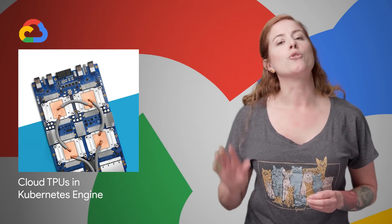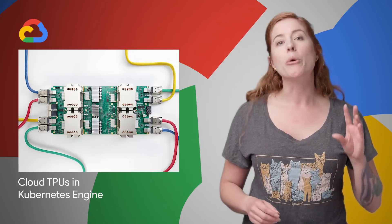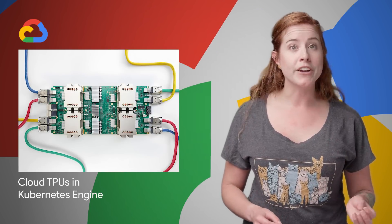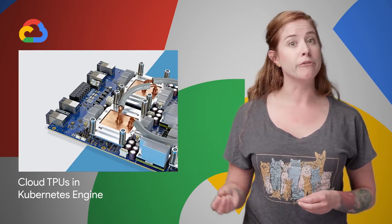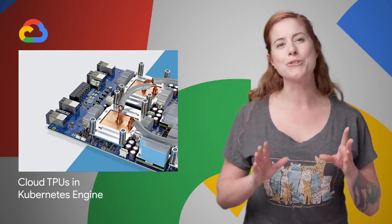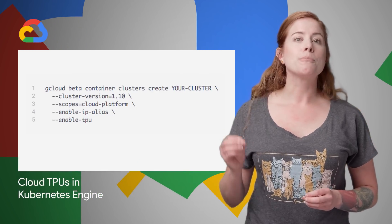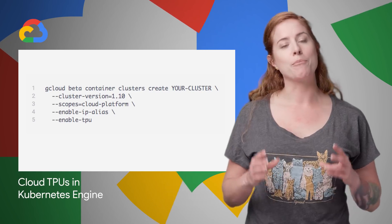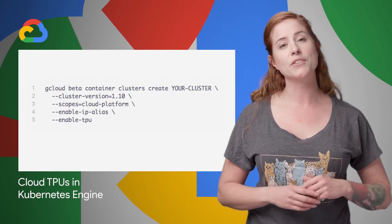Cloud TPUs were designed from the ground up to train and run cutting-edge ML models, with each Cloud TPU v2 delivering up to 180 teraflops of compute power, and each Cloud TPU v3 providing up to 420 teraflops. Google-designed Cloud TPUs are now publicly available in beta on Google Kubernetes Engine. GKE also supports preemptible Cloud TPUs that are priced 70% lower than the standard price of Cloud TPUs. Details are on the post.